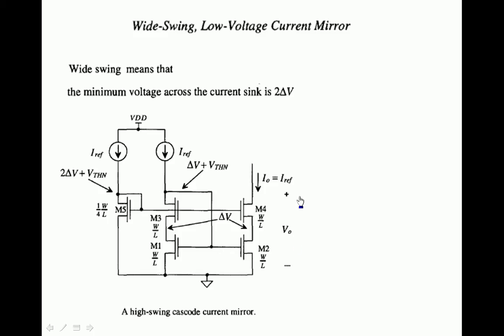That gate voltage will be the input for transistor M4. If we need V0 minimum to be 2 delta V, M4 will take delta V and M2 has to take delta V — total is 2 delta V. So the drain voltage of M4 must be at 2 delta V. To keep both transistors in saturation, the gate voltage must be Vt greater than 2 delta V, so the gate voltage of M4 should be supplied as 2 delta V plus Vt, and then V0 minimum will become 2 delta V.